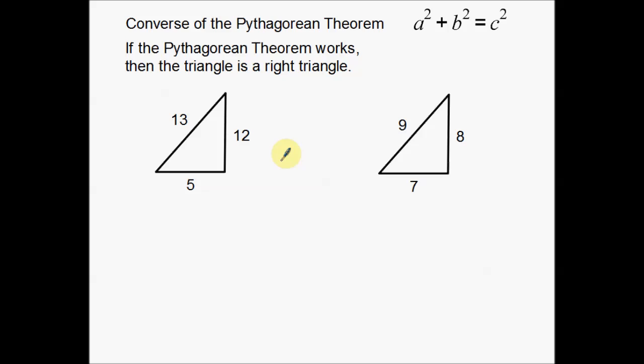Let's just go ahead and jump into it. Pythagorean Theorem I have up here on the right side, a squared plus b squared equals c squared. We're going to plug these numbers in and see if they work for the Pythagorean Theorem. And if they don't, well then this isn't a right triangle.